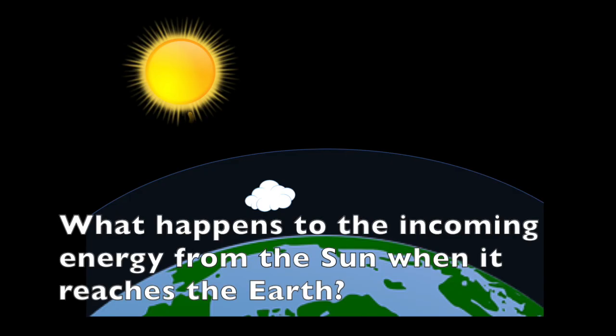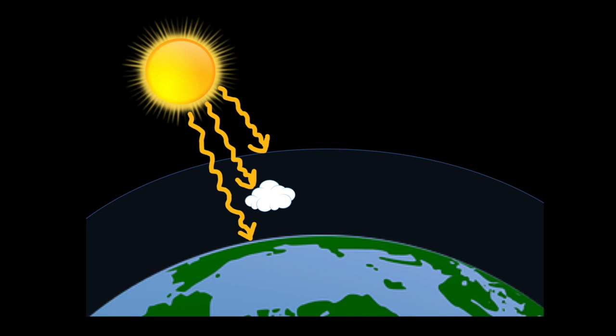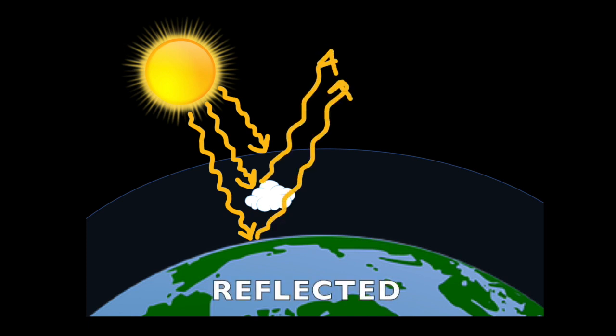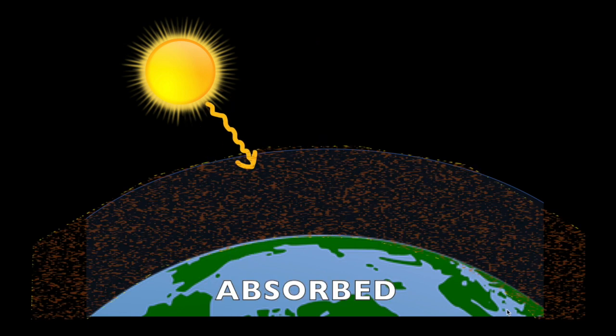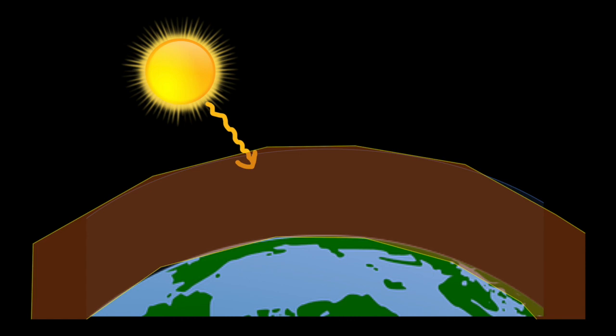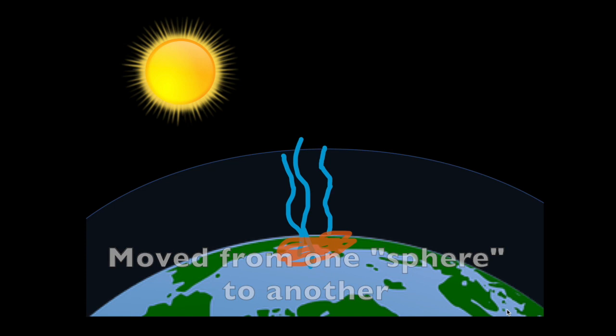So, what happens to the incoming energy from the Sun when it reaches the Earth? Well, there are a few things that can happen to it. The energy can be reflected back into space. The energy can be absorbed by the Earth or the clouds or the atmosphere. The energy can be moved around from one of Earth's spheres to another.